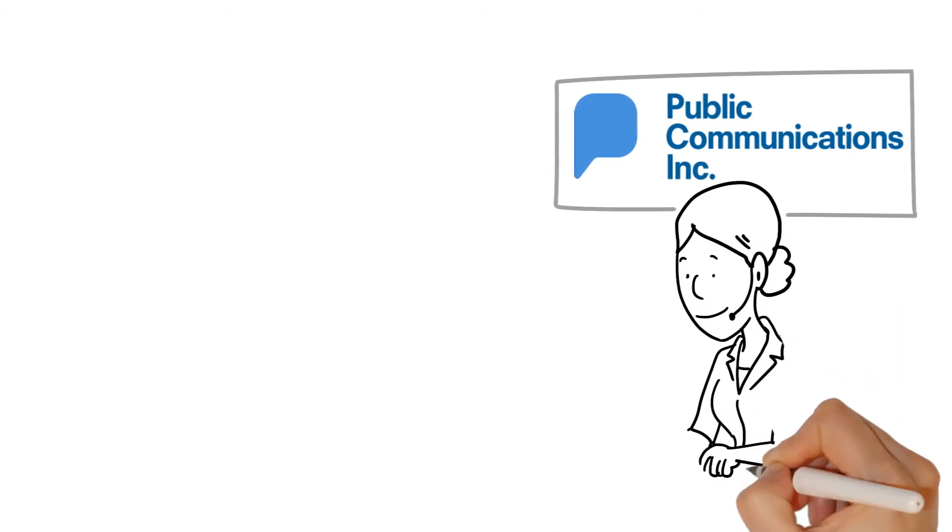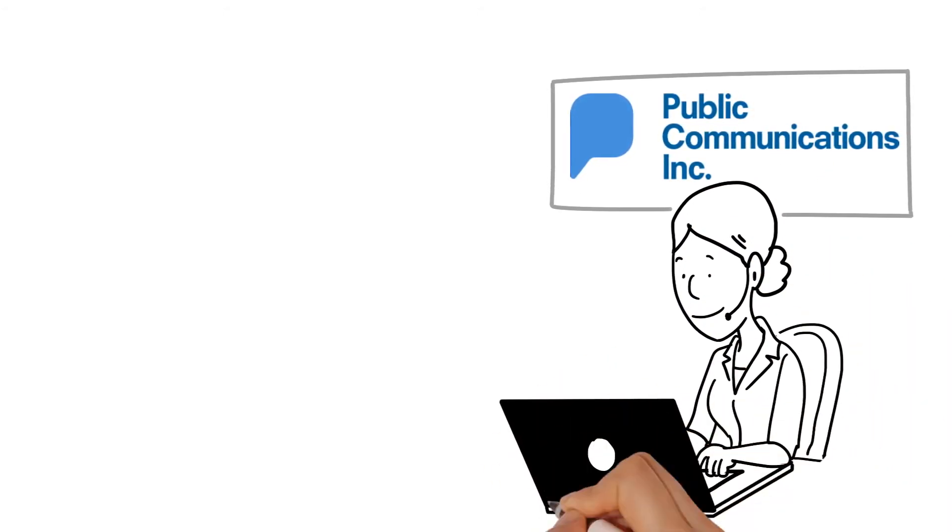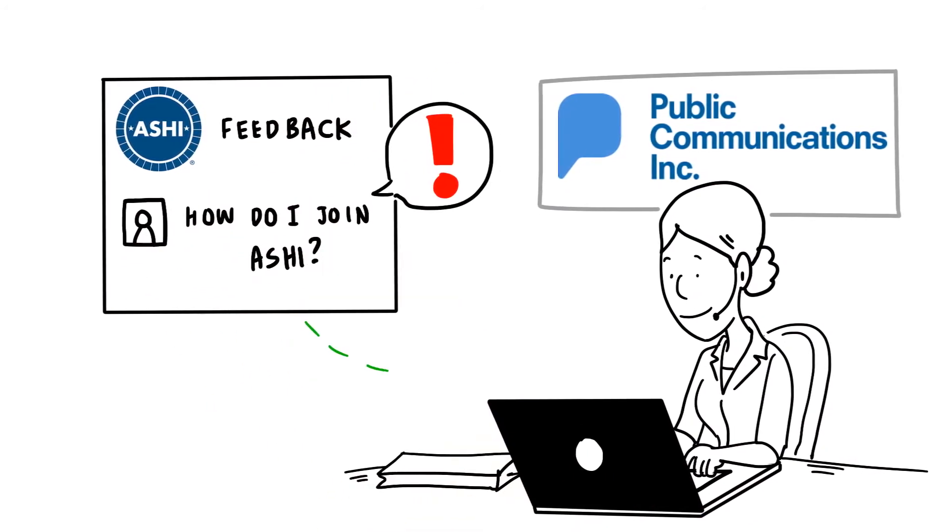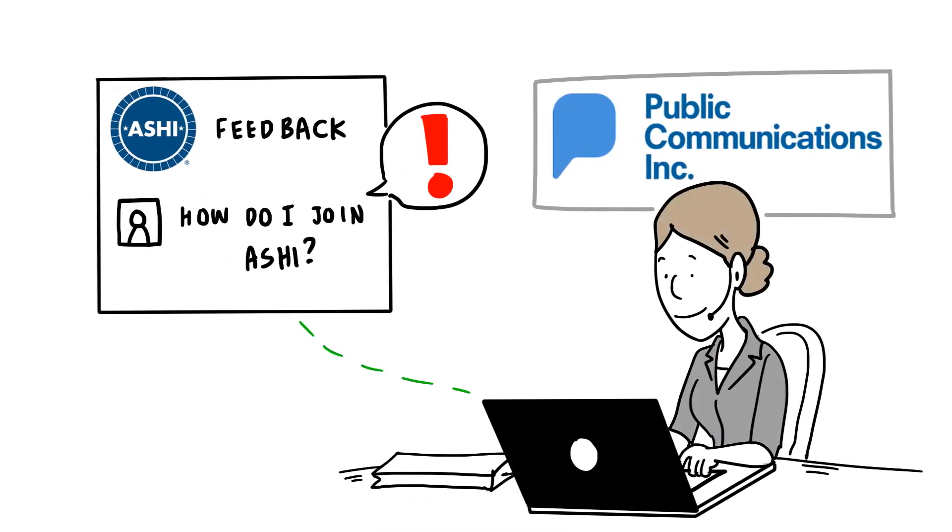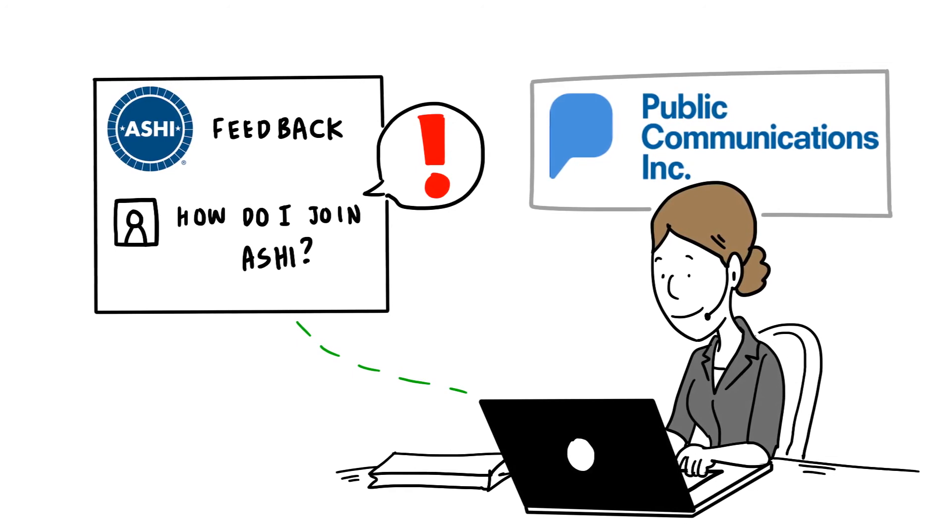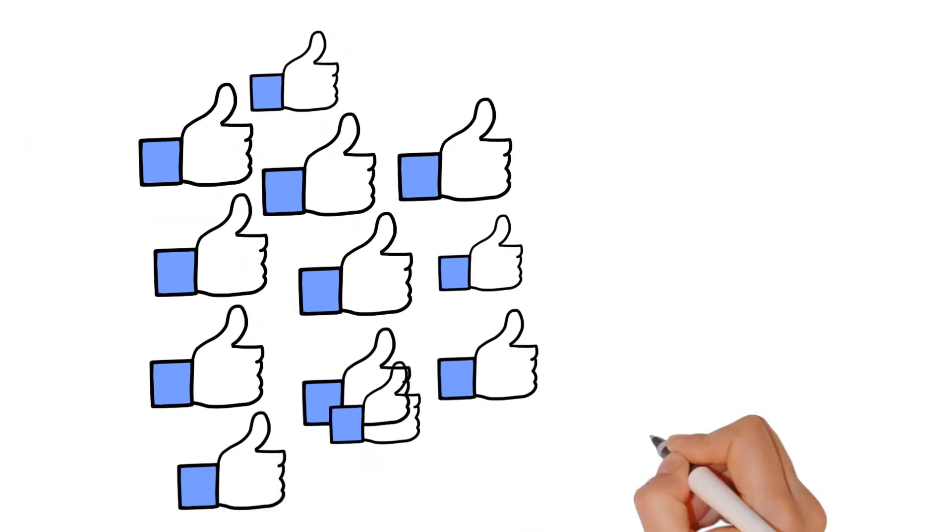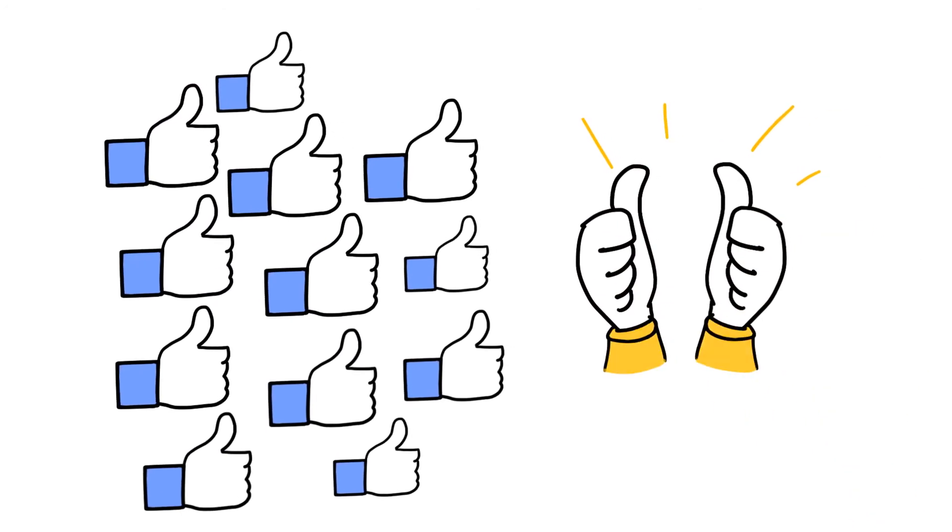We're the first line of communication that customers talk with on social media. If someone posts an issue on an ASHI page, we respond within hours to make sure it's fixed and ASHI's reputation is safeguarded against complaints. But social media can be fun too, which is why we design contests to engage customers and members alike.